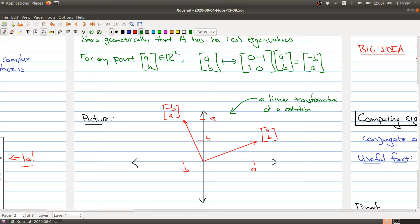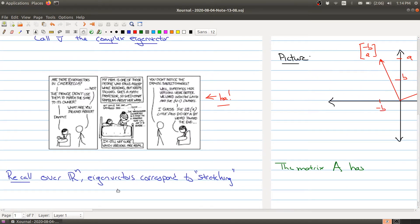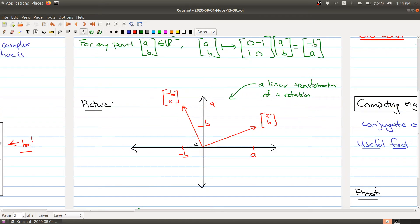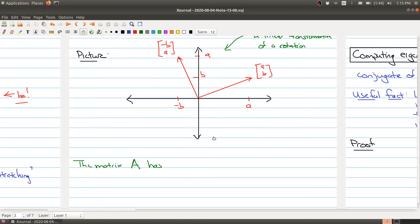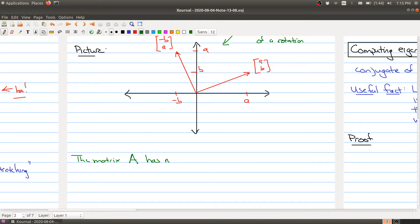We have a linear transformation of a rotation. Every point that you stick in will get rotated 90 degrees about the x-axis. So if eigenvalues and eigenvectors correspond to stretching, there's going to be no real eigenvalues because no vector gets stretched. No vector keeps its direction. The matrix A has no real eigenvalues since every point is sent to a new direction.